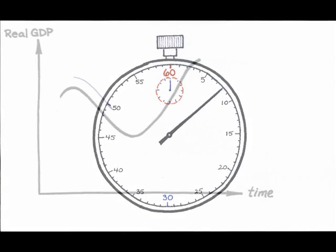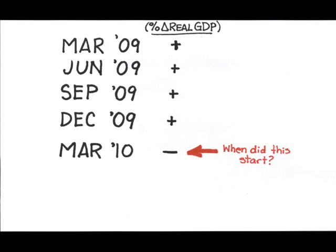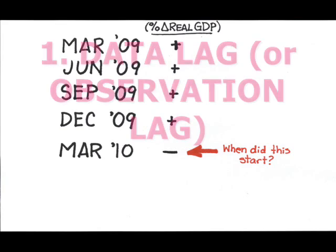Suppose there's a downturn in the economy. First, how do I know there's been a downturn? Remember, a recession is defined as two consecutive quarters of declining real GDP. This means that somebody out there is gathering real GDP data for you. If the actual downturn started, say, in January, it may take a few months to actually see the trend in the data and realize what's happening, particularly if the data is collected quarterly. This is called the data lag, or the observation lag.